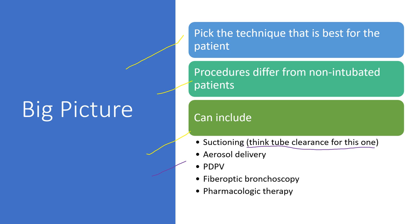Other things to be discussed include aerosol delivery, postural drainage, percussion, vibration, and how those fit into the picture with mechanically ventilated patients. Fiber optic bronchoscopy is an option, but remember this can be tricky with an artificial airway as you're occluding part of their airway — they could hypoventilate and desaturate, especially if you're suctioning quite a bit causing atelectasis. Pharmacological therapy is also worth considering.